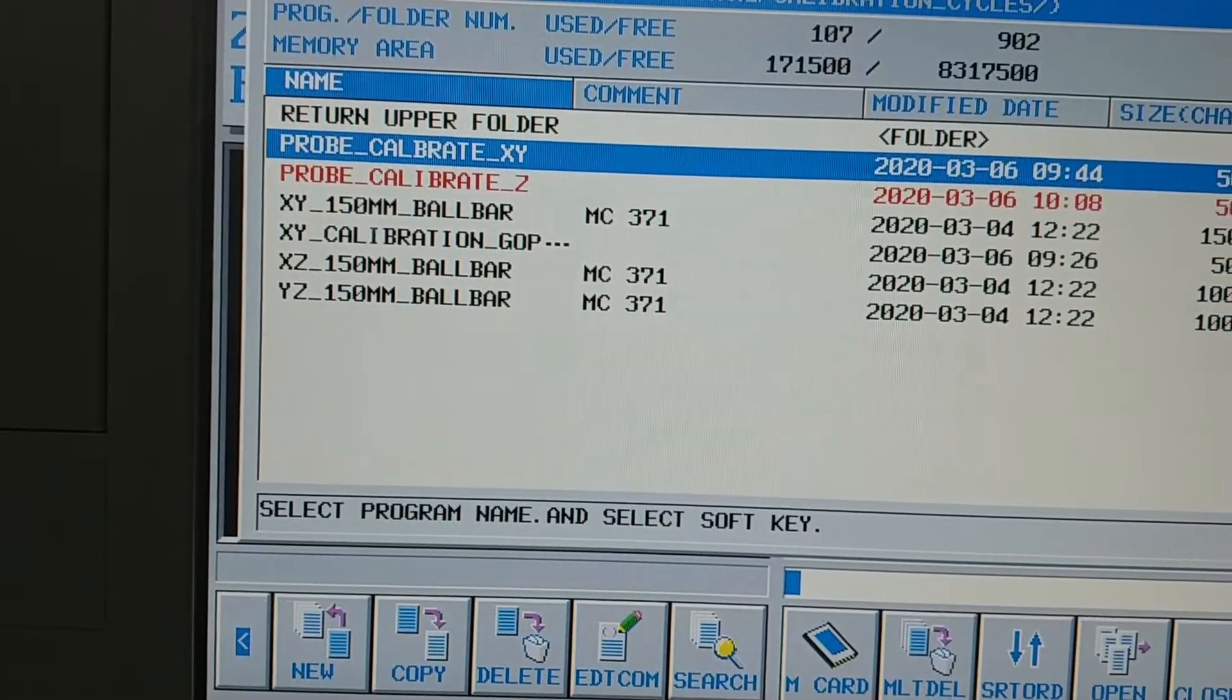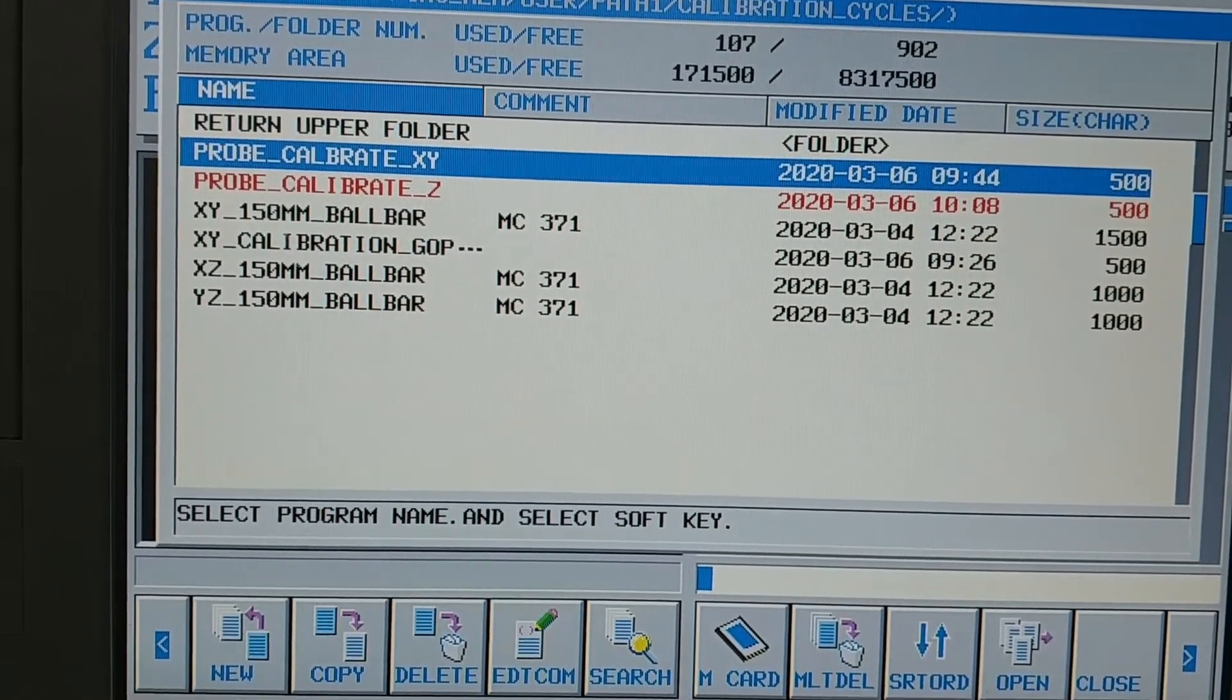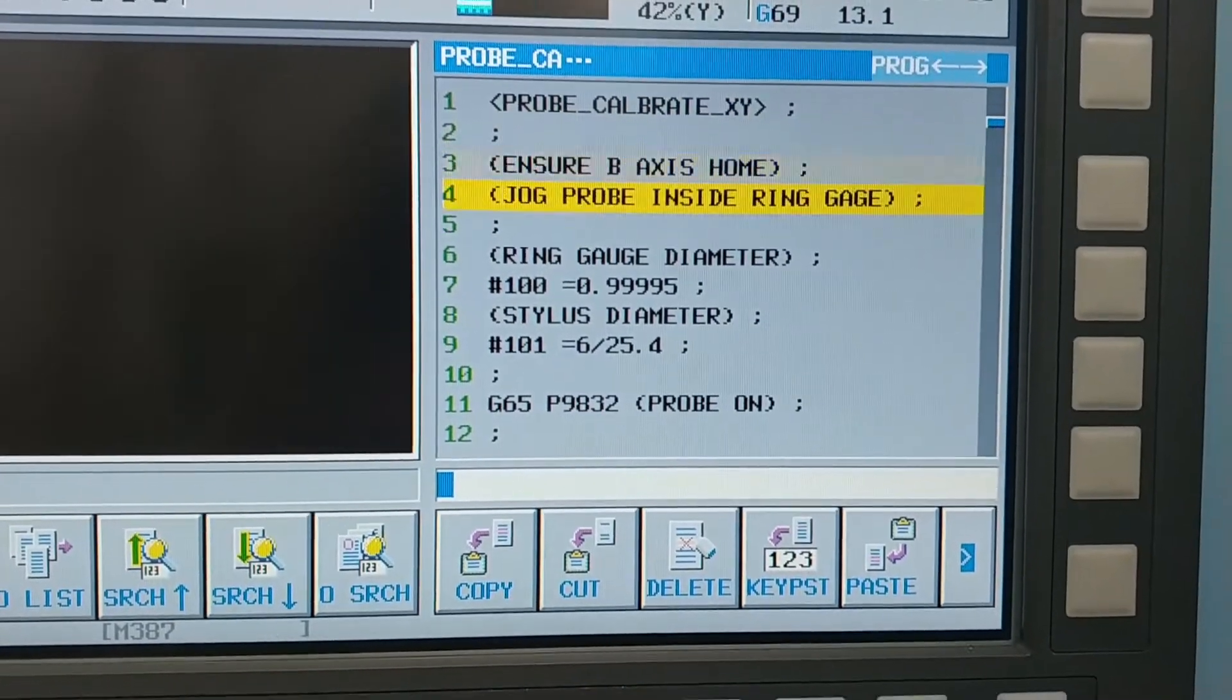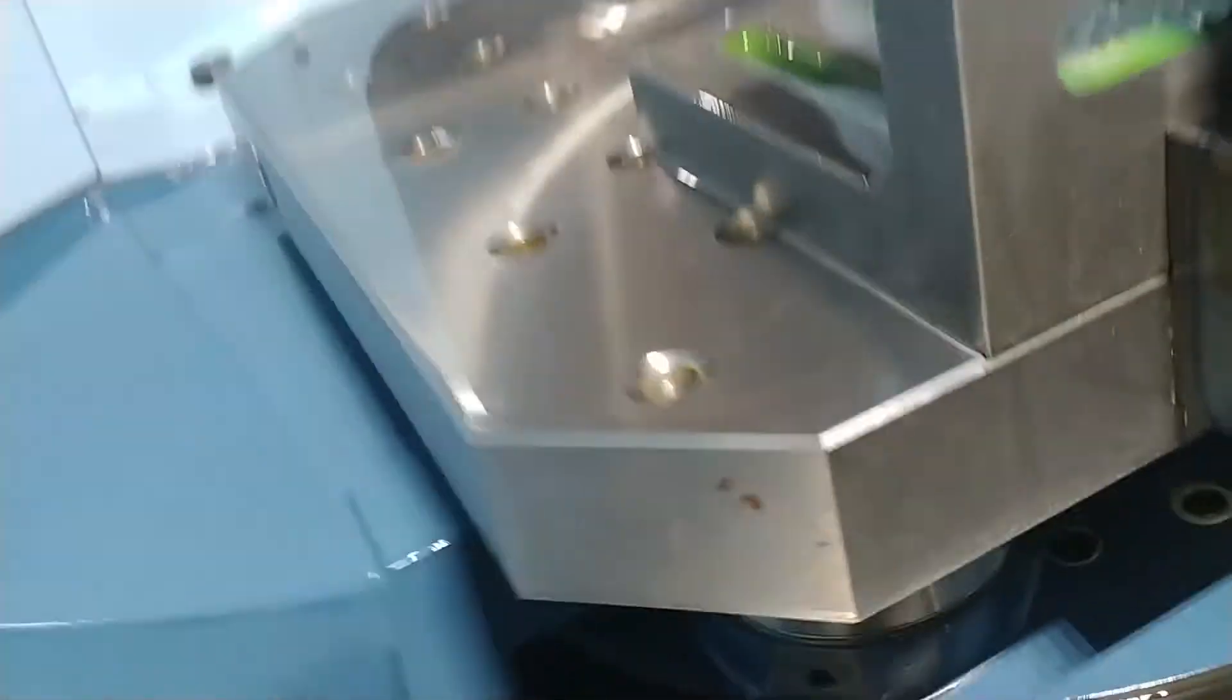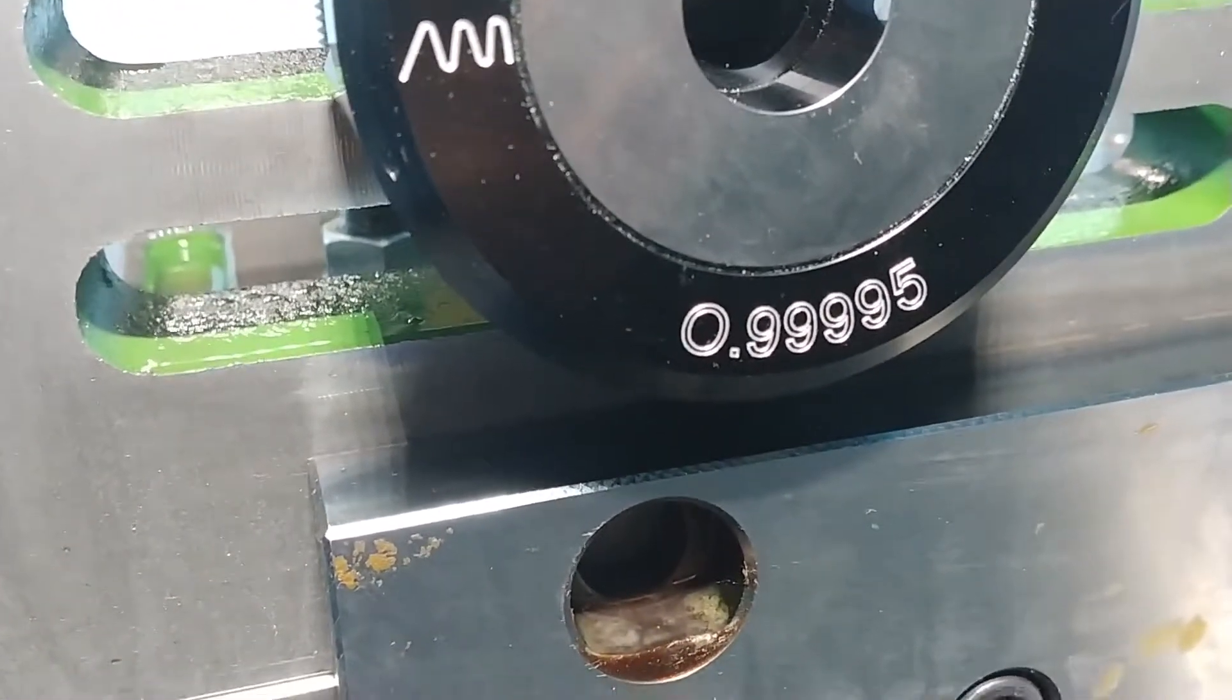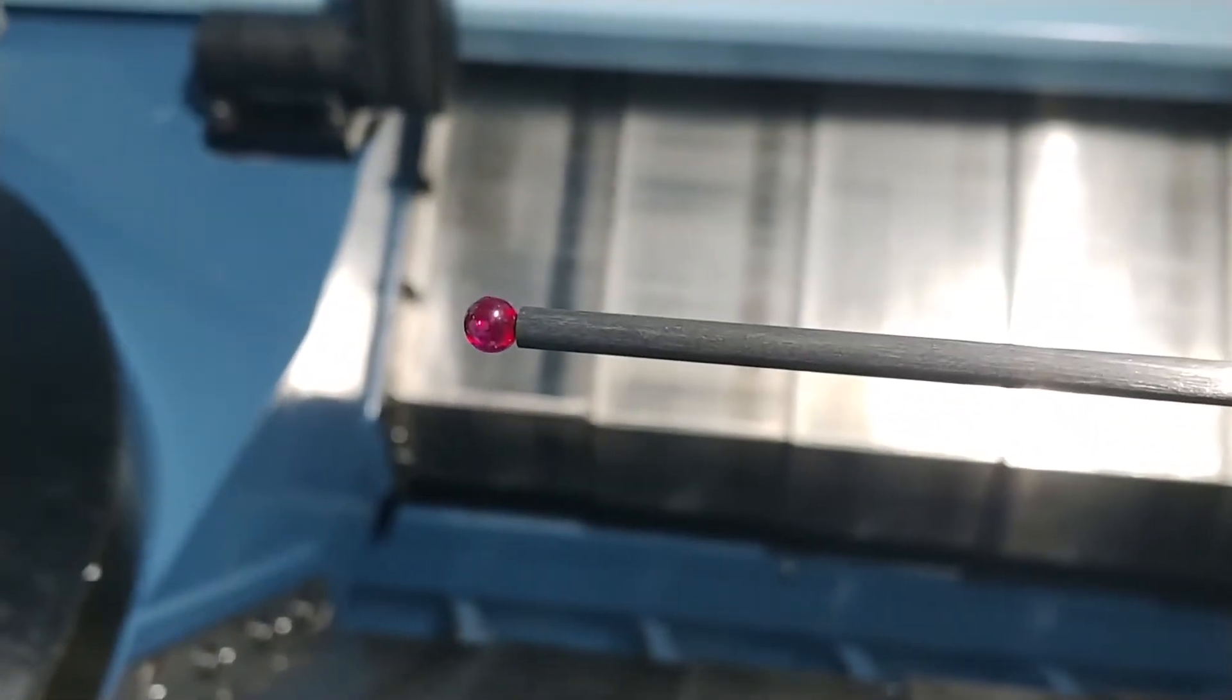Find the program named Probe Calibrate XY and set it as the active program in the machine. At the top of this program, you will see a line where macro variables are set to the diameter of the ring gauge and the diameter of the stylus ball. Make sure that these numbers match the diameter of the ring gauge and the diameter of the stylus ball that you are using and edit the values accordingly if they do not.